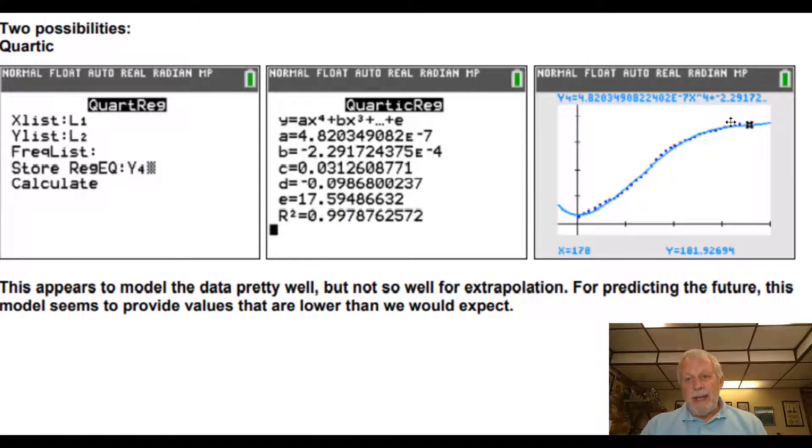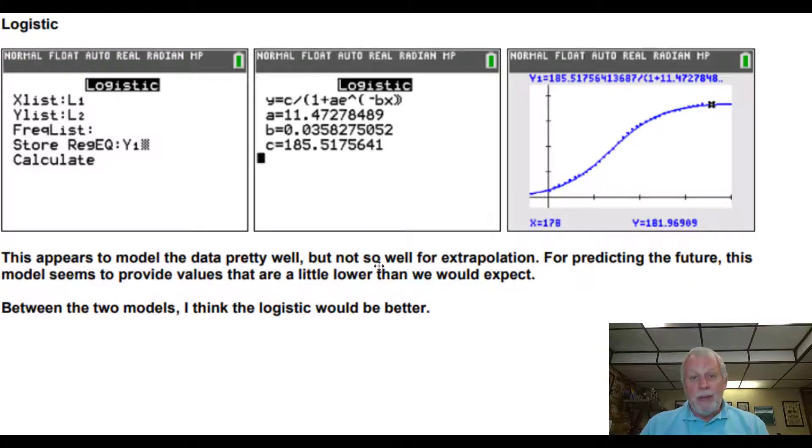Pause as needed. So quartic looked like this. And as you can see, it's kind of a little bit lower here as we're going past the data. So for prediction purposes, not so good. Extrapolation, not so good. Interpolation within the data looks pretty good. Logistic looks pretty good all the way around. Logistic definitely seems to be a better predictor here.